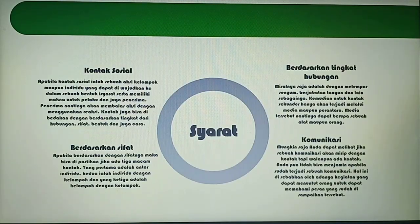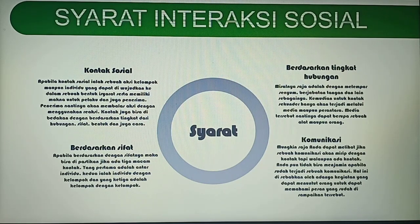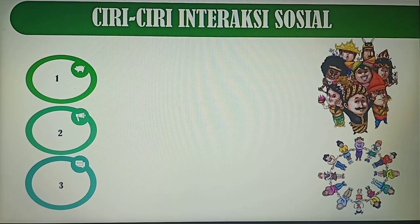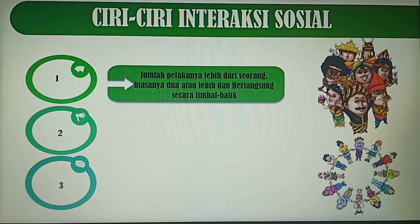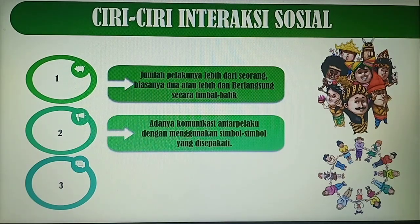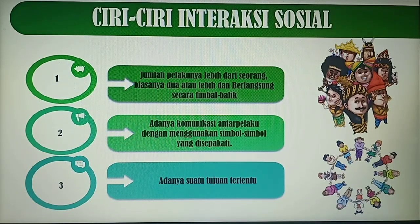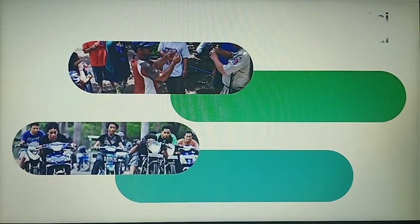Sesudah memberikan faktor proses terjadinya interaksi sosial, di sini ada syarat-syarat untuk interaksi sosial, ada empat juga: yang pertama ada kontak sosial, yang kedua berdasarkan sifat, yang ketiga berdasarkan tingkat hubungan, dan yang terakhir adalah komunikasi. Sesudah itu, setiap interaksi sosial memiliki ciri-ciri: yang pertama jumlah pelakunya lebih dari seorang, yang kedua adanya komunikasi antar pelaku dengan menggunakan simbol-simbol yang disepakati, dan yang ketiga adanya suatu tujuan tertentu.